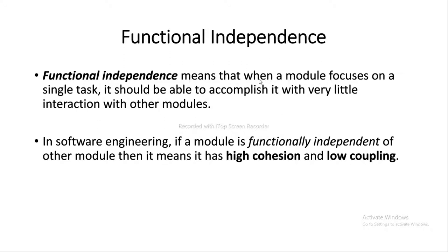In order to build software with Effective Modular design, there is a factor called Functional Independence. Functional Independence literally means that when a module focuses on a single task, it should be able to complete it with minimal interaction with other modules. If a module is functionally independent of other modules, then it means it has high cohesion and low coupling. Functional Independence is considered as a sign of good code in modularization.